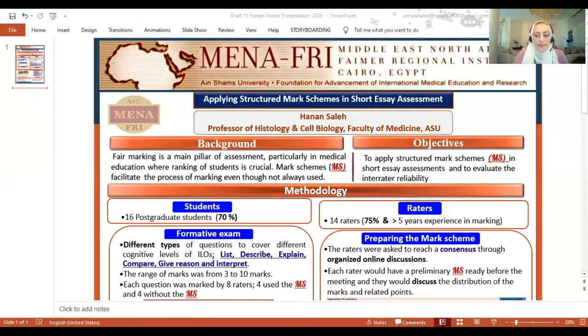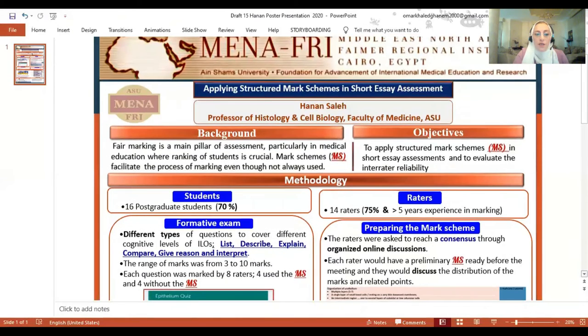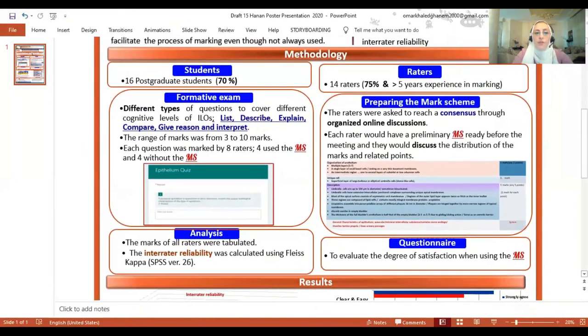As regards the formative exam and the choice of questions, we decided to include different types of questions to cover the different cognitive levels of the ILOs. For example, to list, to describe, to explain, to compare, to give reason, and to interpret a photomicrograph from a slide.